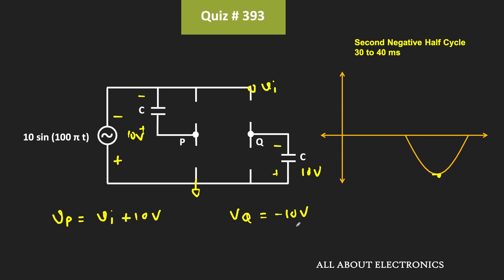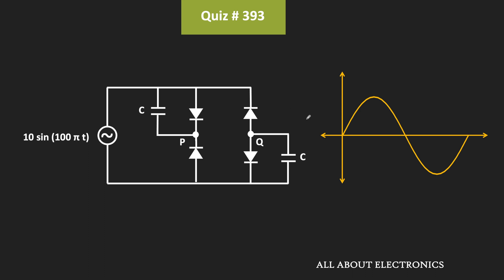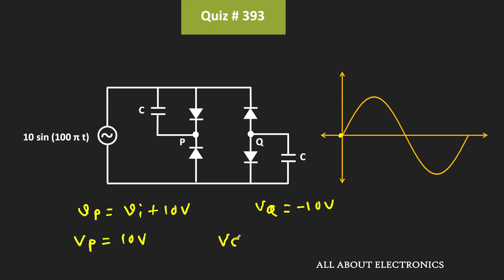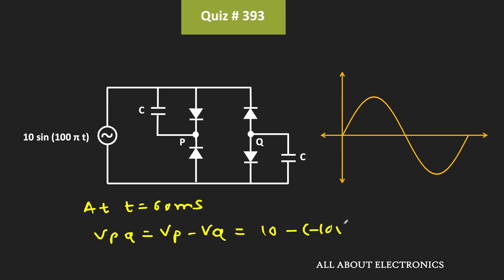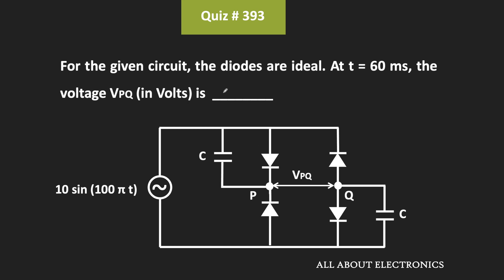That means after 3 cycles, at t equal to 60 milliseconds, this voltage pattern repeats. At t = 60ms, Vi = 0V, so Vp = 0 + 10V = 10V, and Vq = minus 10V. Therefore, VPQ = Vp minus Vq = 10 minus (minus 10) = 20V. After three cycles at t = 60ms, the voltage VPQ is equal to 20V, and that is the answer.